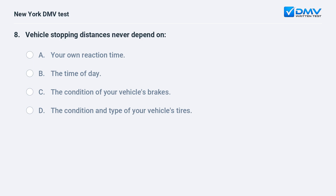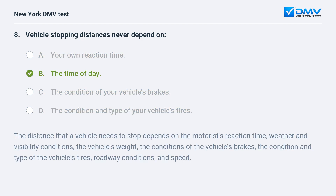Vehicle stopping distances never depend on: A. Your own reaction time. B. The time of day. C. The condition of your vehicle's brakes. D. The condition and type of your vehicle's tires. The answer is B: The time of day. The distance that a vehicle needs to stop depends on the motorist's reaction time, weather and visibility conditions, the vehicle's weight, the condition of the vehicle's brakes, the condition and type of the vehicle's tires, roadway conditions, and speed.